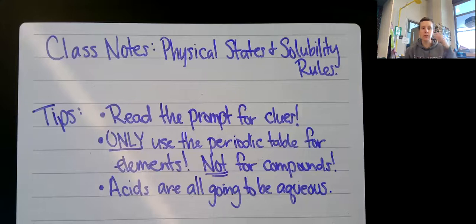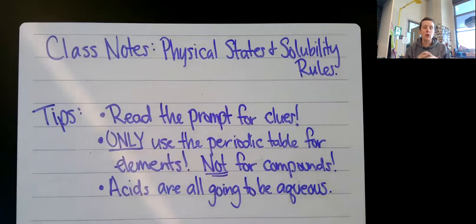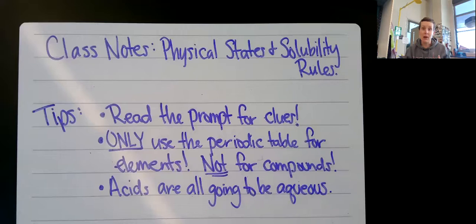Okay everybody, these are going to be the class notes on physical states and solubility rules. There's a lot to this. We're not trying to make it difficult - we're just trying to break it down and make it a little bit easier for you. It's not going to be an incredibly crucial piece just for Chem 1's sake, but if you really want an understanding of chemistry and you want to go on in chemical fields - biology, medicine, things like that - these are going to become really important. And if you can get them now, it'll make all of your future classes in science a lot easier. So here are some class notes on physical states and solubility.